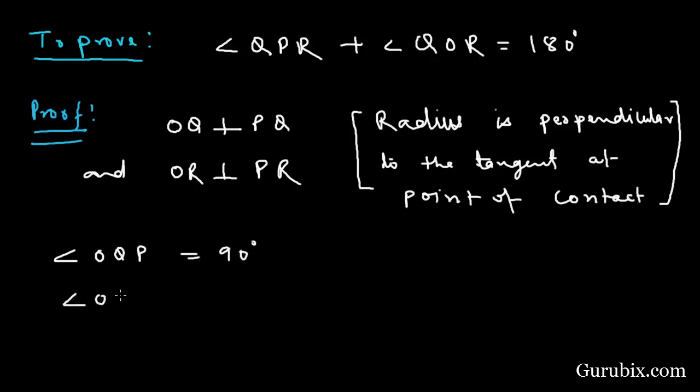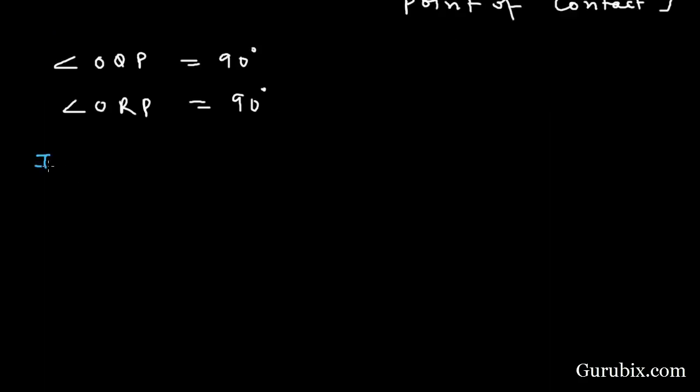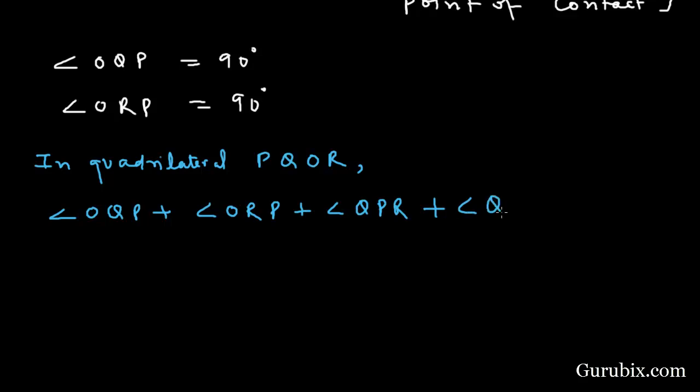Now we shall move to the quadrilateral. In quadrilateral PQOR, angle OQP plus angle QOR plus angle ORP plus angle QPR equals 360 degrees, because the sum of interior angles of a quadrilateral equals 360 degrees.